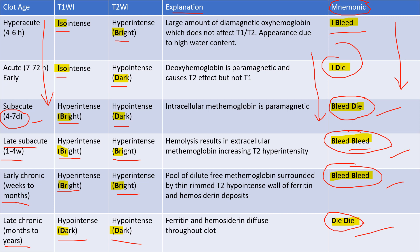You will not only get subdural hematoma questions — you can get intracranial or brain parenchymal hematomas, or epidural hematomas. All those images can appear and you should be able to solve such MCQs when an MRI image is given.